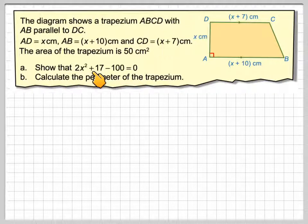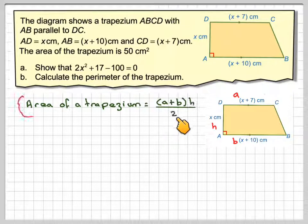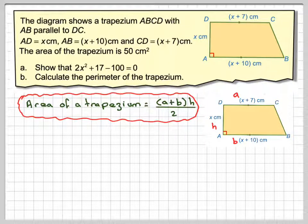We have to show that 2X squared plus 17 minus 100 is equal to 0, and calculate the perimeter of the trapezium. The way to start is to use the area of the trapezium, which is 50 centimetres squared. The area of a trapezium is AB times H over 2.